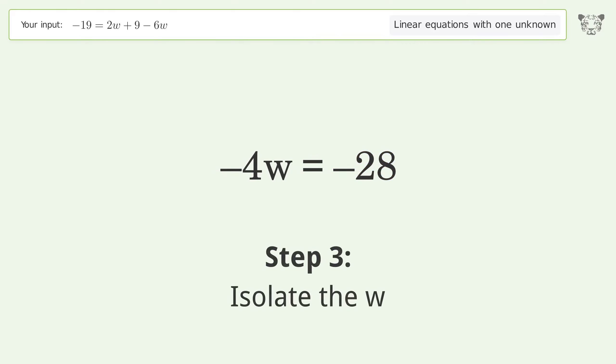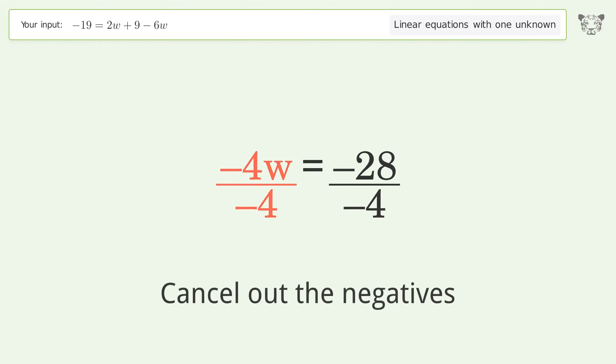Isolate the w. Divide both sides by negative four. Cancel out the negatives.